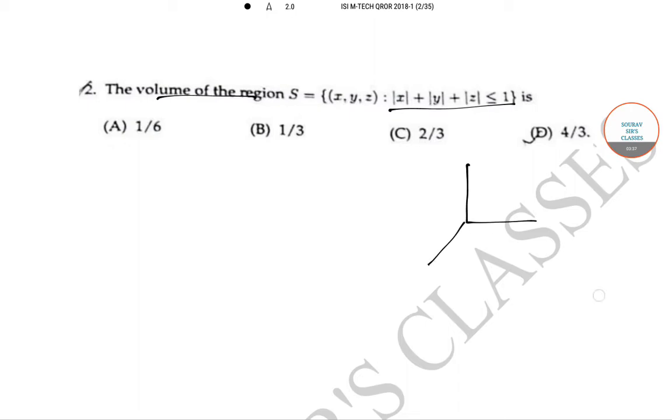If we plot this region, we get a shape which forms a tetrahedron in each octant. As there are eight quadrants, the required volume is the volume of one tetrahedron times 8.